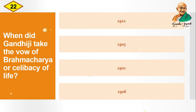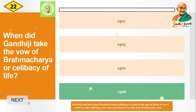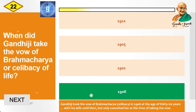Question: When did Gandhiji take the vow of Brahmacharya, or celibacy of life? Options are: 1911, 1905, 1902, 1906. The correct answer is 1906. Gandhiji took the vow of Brahmacharya or celibacy in 1906 at the age of 36 years.